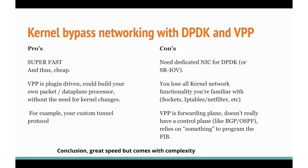The cons: you do need dedicated NICs for DPDK typically, unless you use SR-IOV where you create virtual NICs. You lose all kernel network functionality. In my case, the test machine had four 10-gig NICs and I needed to keep at least one for management so I could SSH in. You don't get socket programming, you don't get iptables, you don't get netfilter — you have to reimplement all of that, or find tools such as VPP or OpenVSwitch to do some of it. VPP and OpenVSwitch are really only a FIB — they don't come with a control plane out of the box, though they have APIs to build one.